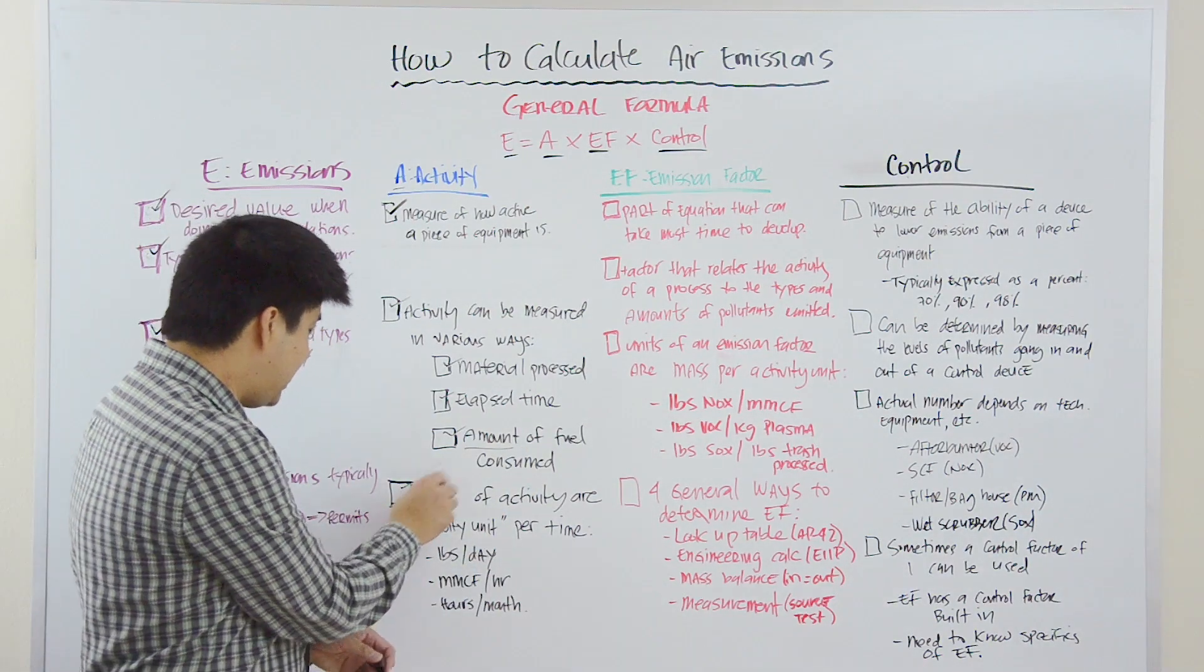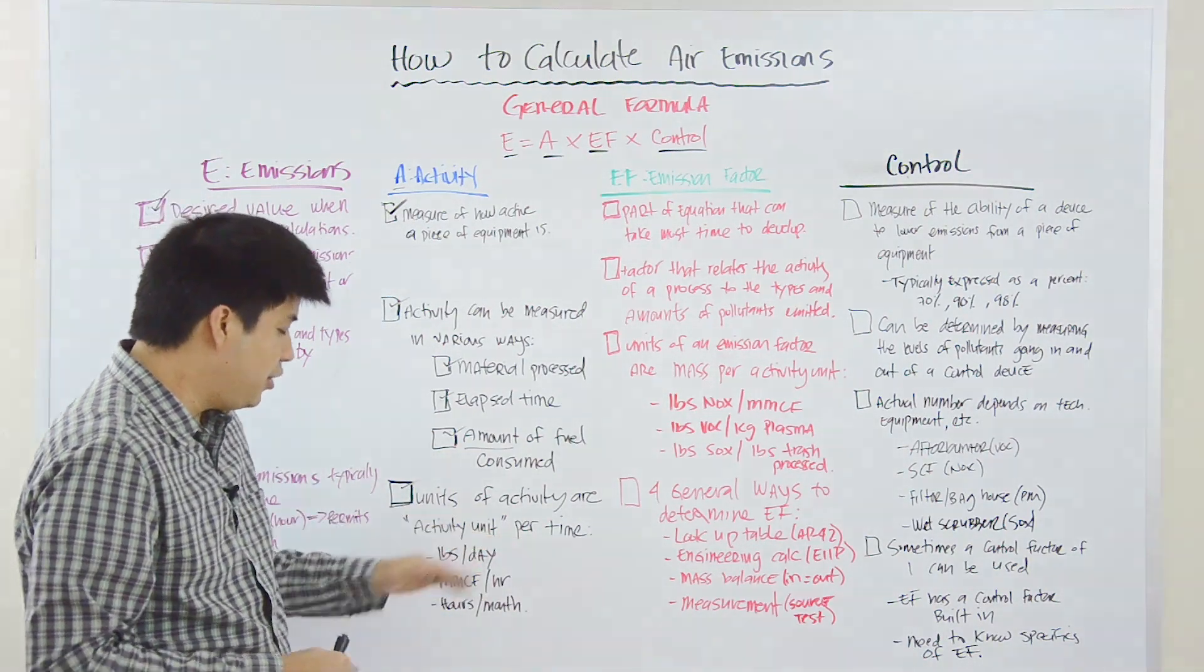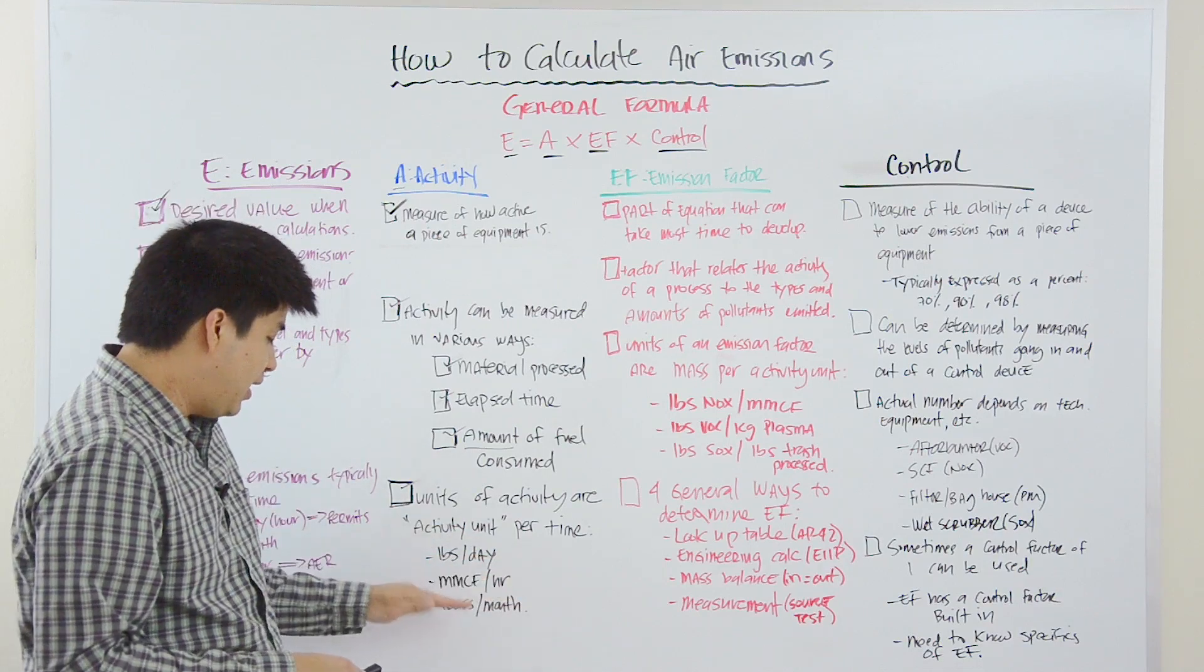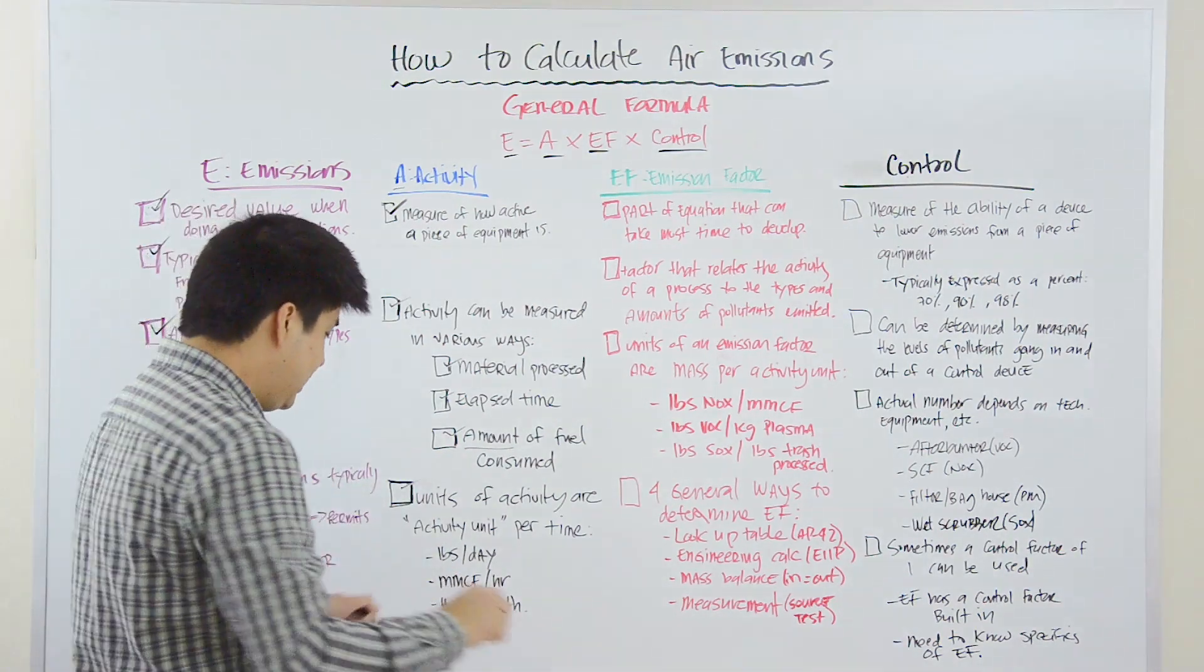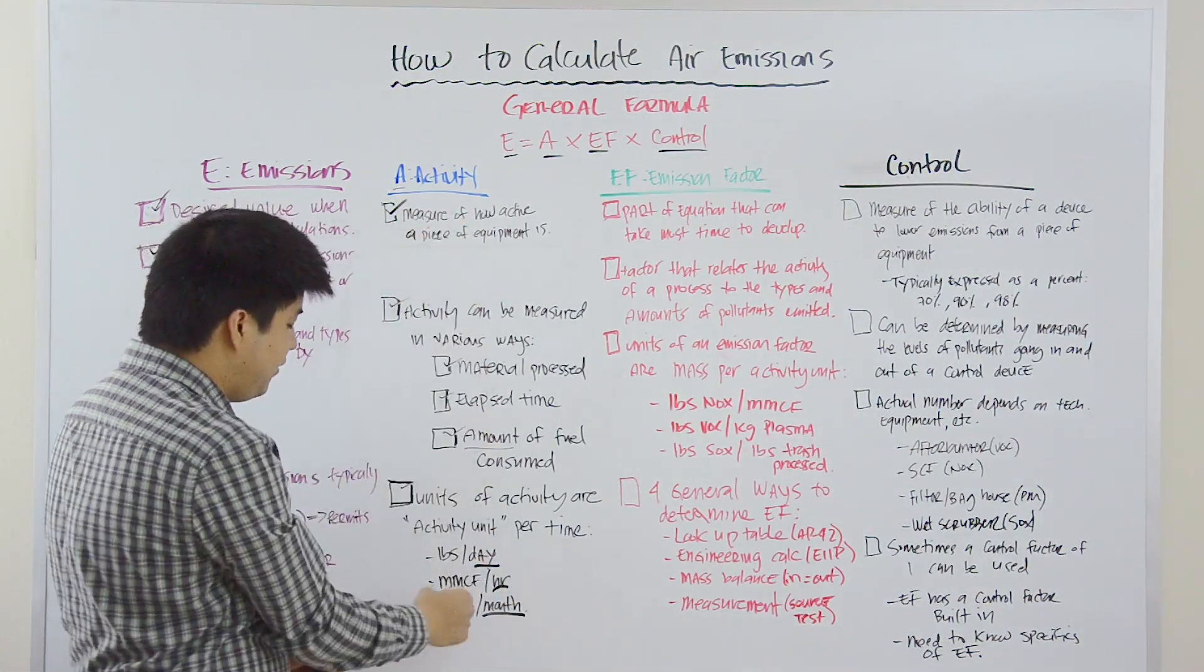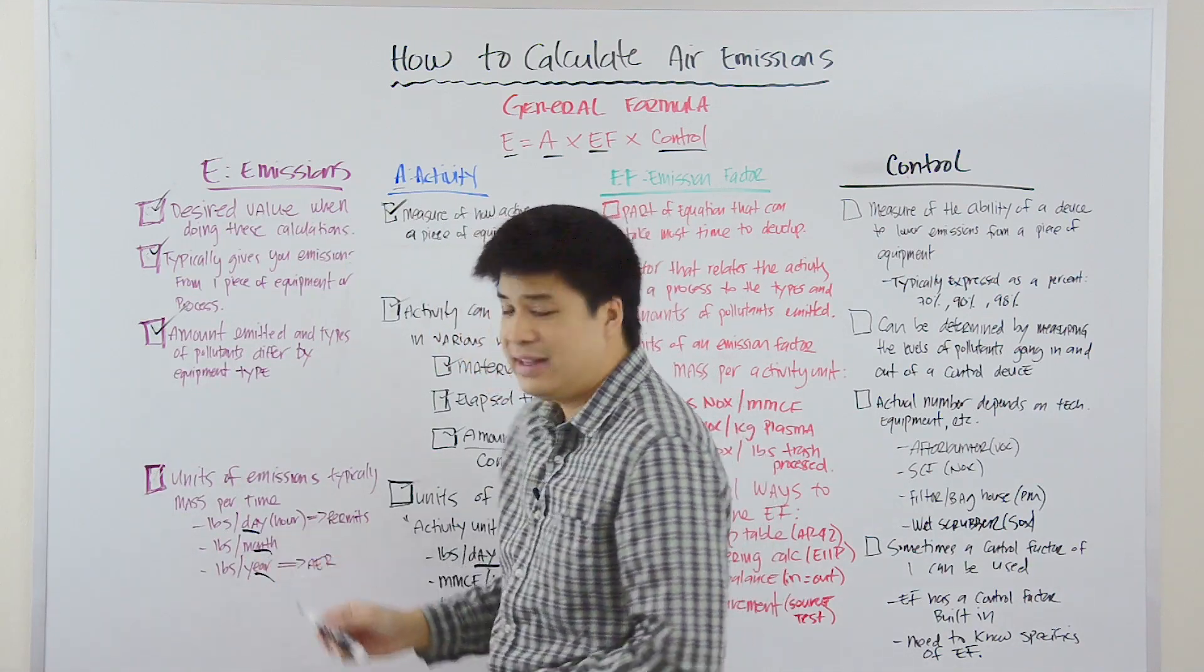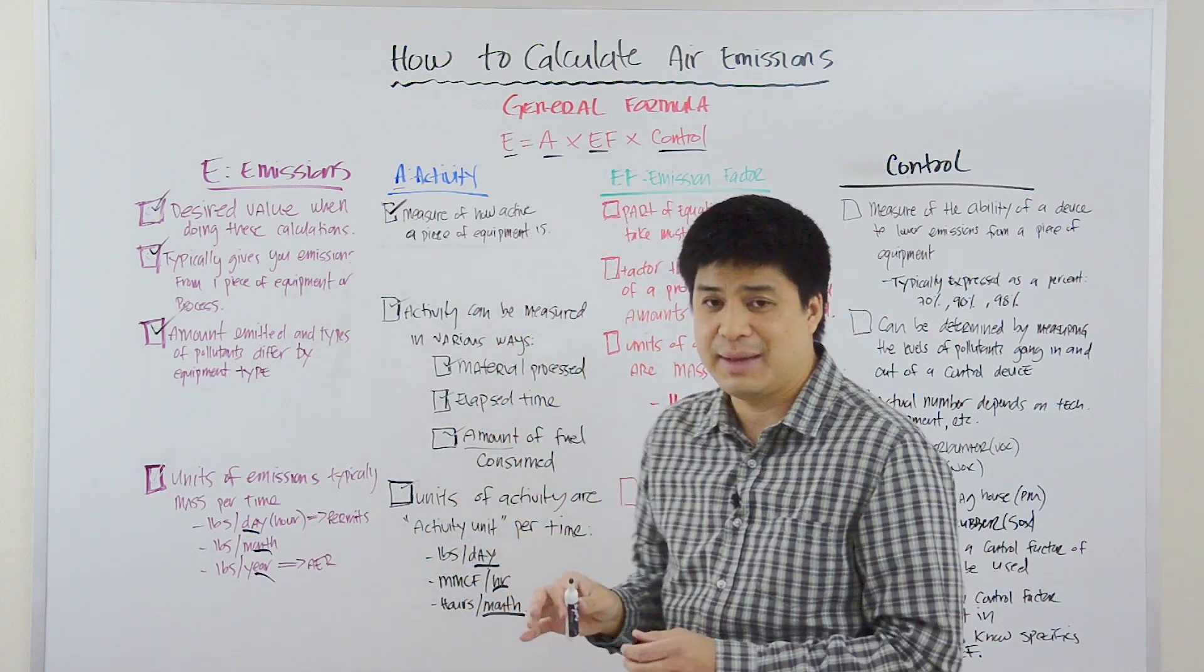Now, that being said, the units of activity are given as activity unit per unit time. So, that's pounds per day, million cubic feet per hour, hours per month. And now, what you should keep in mind is that the denominator of the activity here actually will determine the unit measure here in the emissions. And that's because that's just the way that the units work. And I'll show you an example at the end.